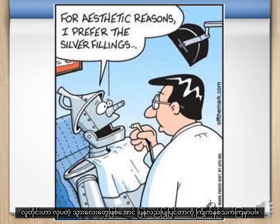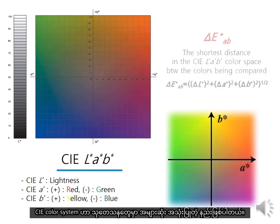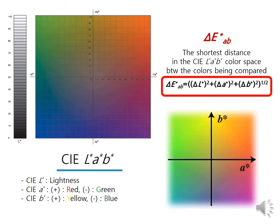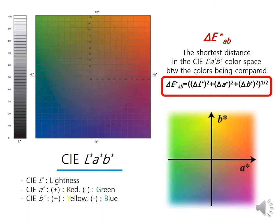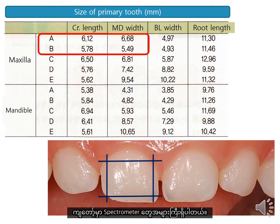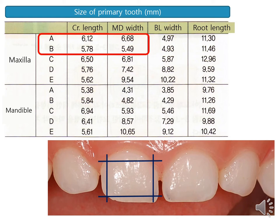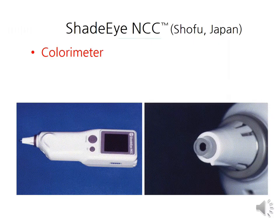Everyone loves aesthetic restorations. The CIE color system is commonly used in perceptual studies for dental color assessment using measurement devices. Color differences are determined between two points in color space by this equation. I have several spectrophotometers, but it was difficult to measure the color of a primary incisor accurately because of their small size.